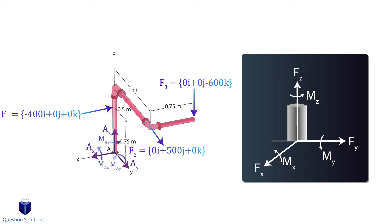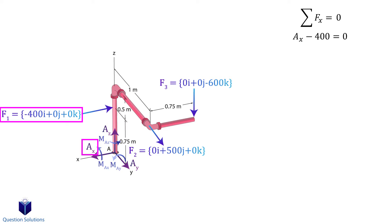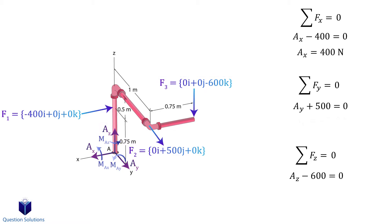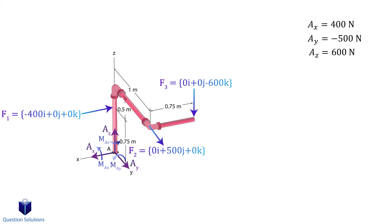Since it's a fixed support at A, we know there will be six reactions: three forces and three couple moments about each axis. To find the three force reactions we write three equilibrium equations, one for each axis. For the x-axis we only have two forces: the x reaction at A and the 400 newton force. We do the same for the y-axis and z-axis forces. Solving gives us the reactions. Note that we get a negative value for A_y — that just means the reaction faces the opposite direction from what we assumed.